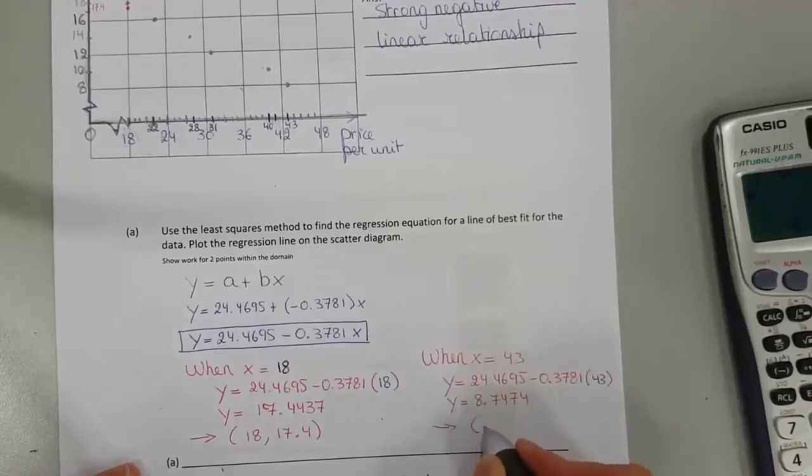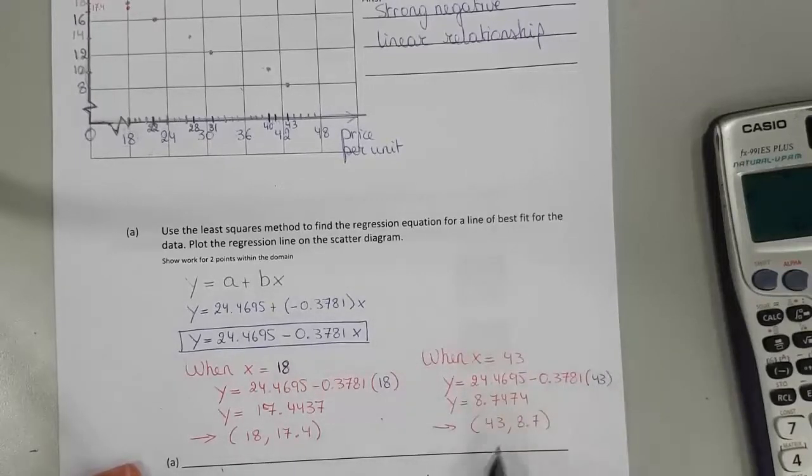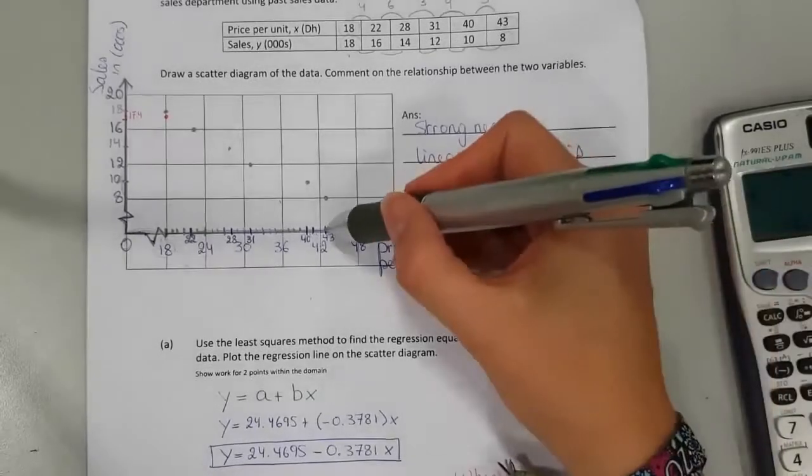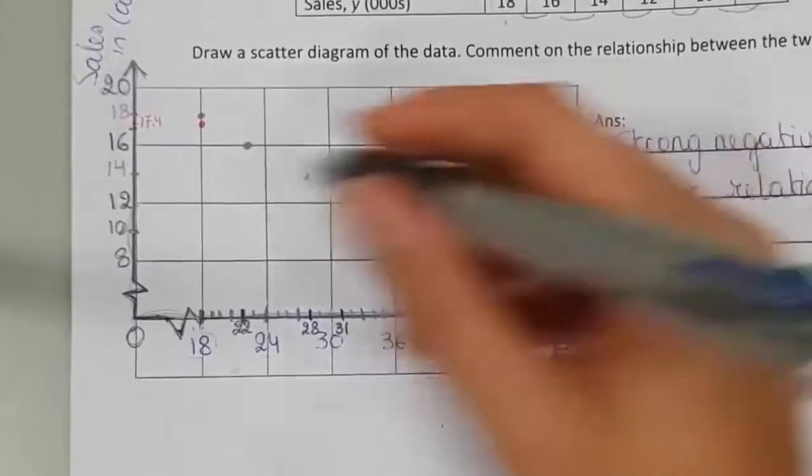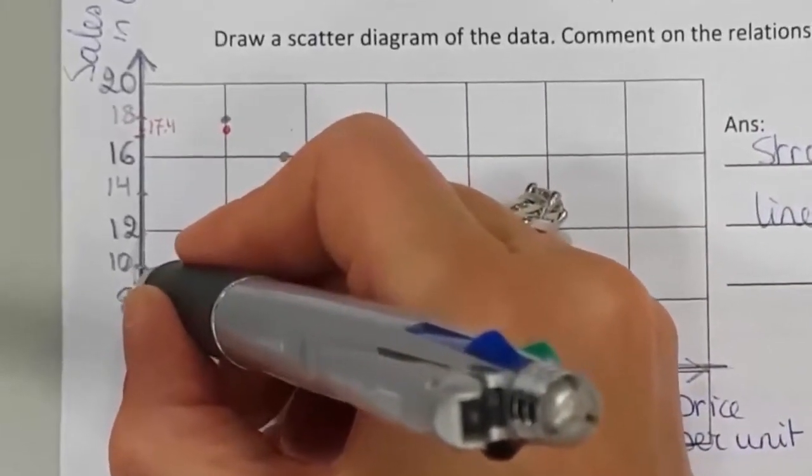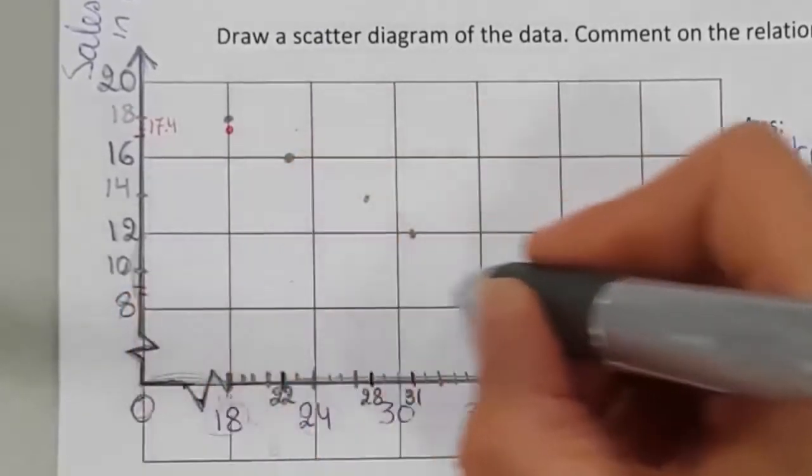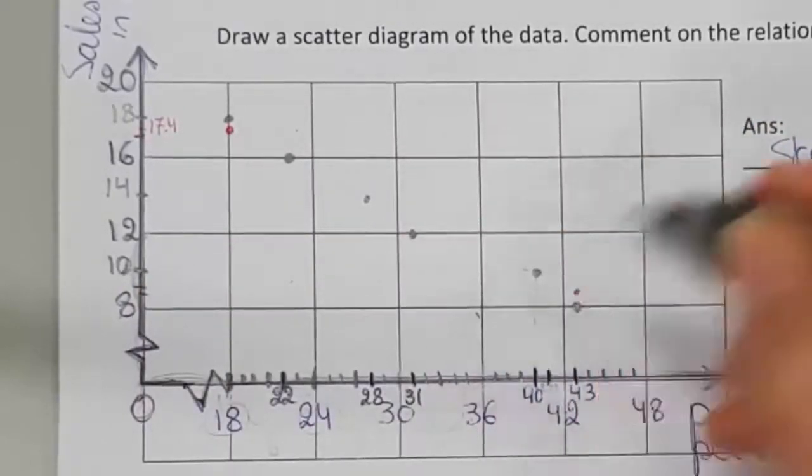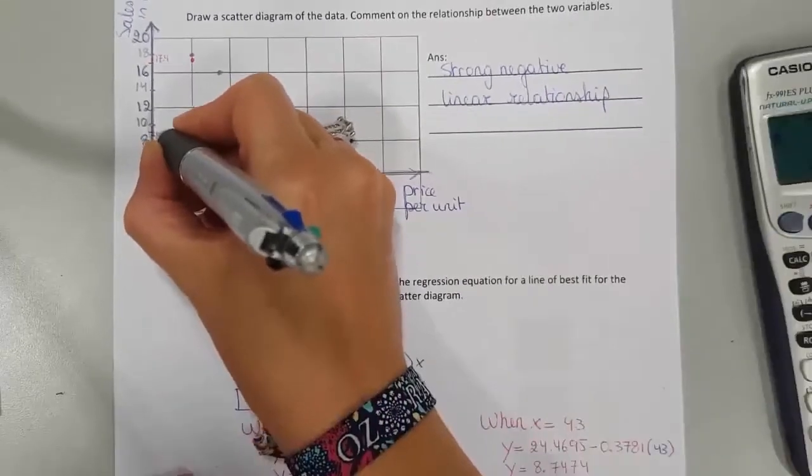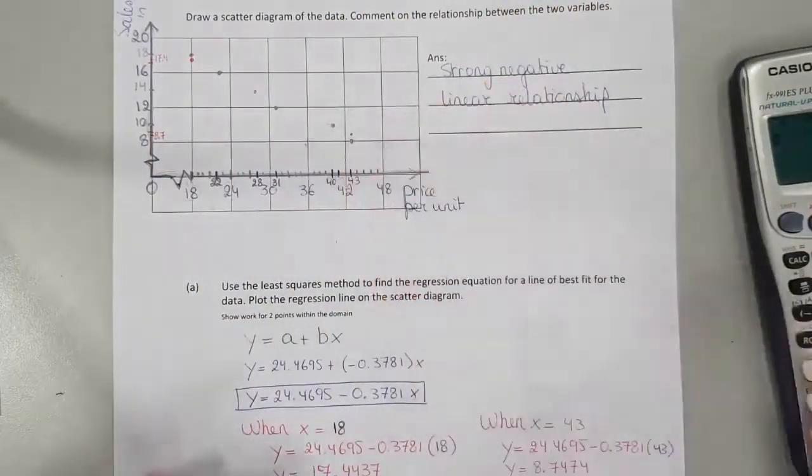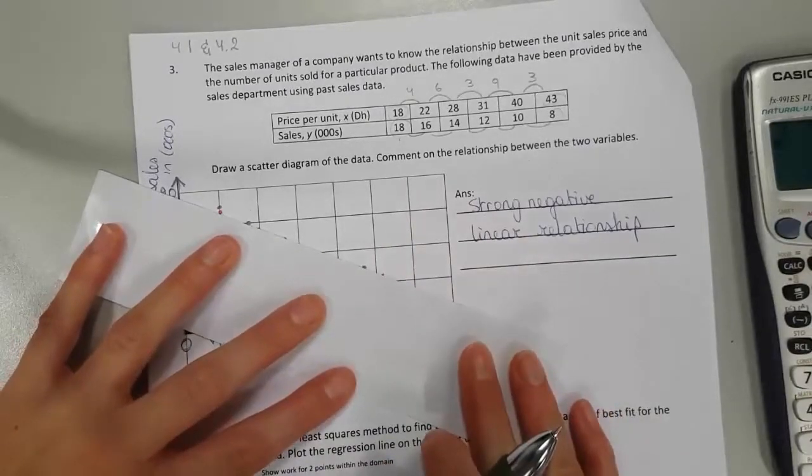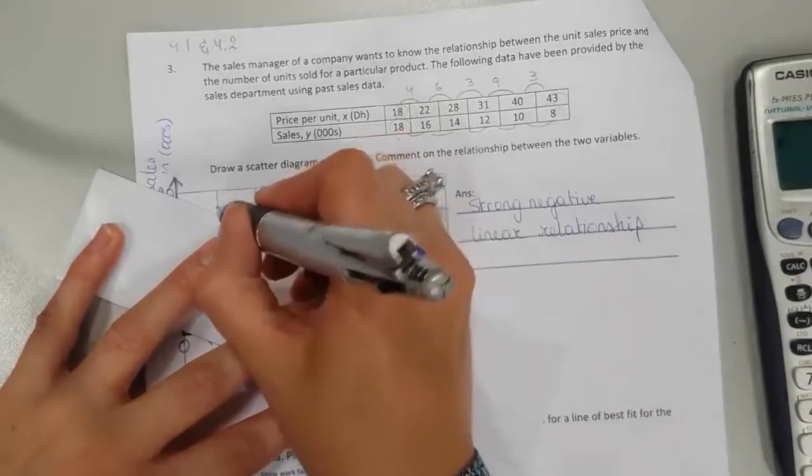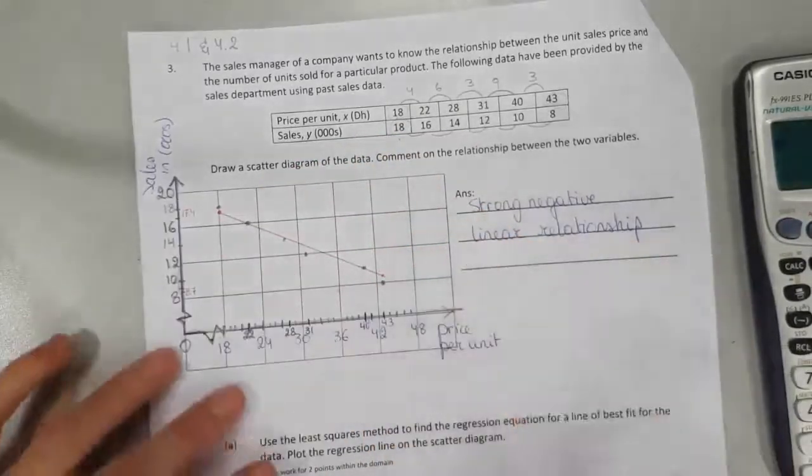So your point is when x is 43, your y is 8.7. Let's graph this. x is 43, y is 8.7. 8, this is 9, 8.7 is a little bit lower than 9. So right there, 8.7. Now try to make a line as accurately as you possibly can. Voila.